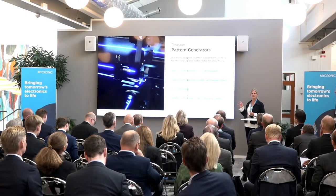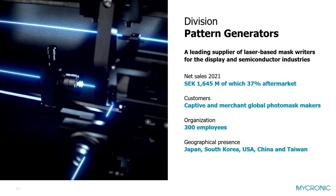Just a few numbers about the Pattern Generator division. In 2021 we had 1.6 billion in revenue, and a large portion — more than 30% — comes from our aftermarket business. We are 300 persons, supported by a number of consultants as well. Our customers are the mask shops, either captive or merchant. We have our headquarters here in Sweden, but our customers are in Japan, South Korea, China, and the US, and we also have an agent in Taiwan.